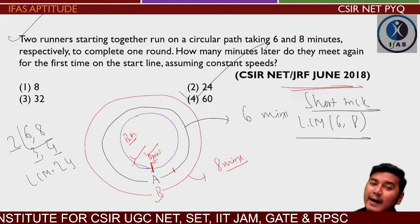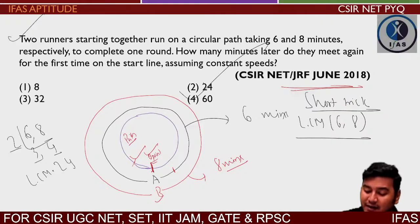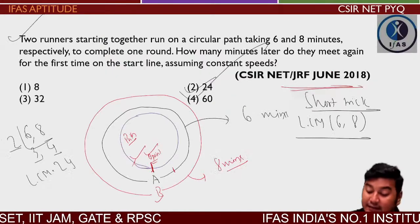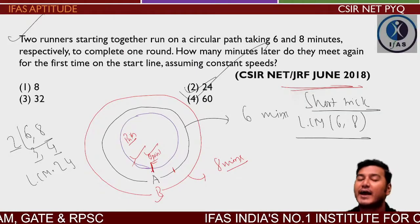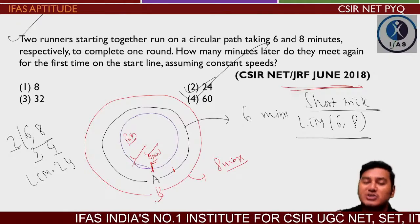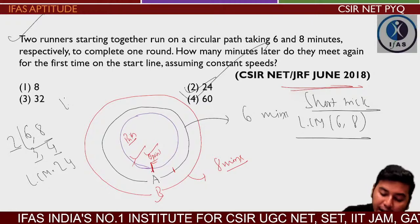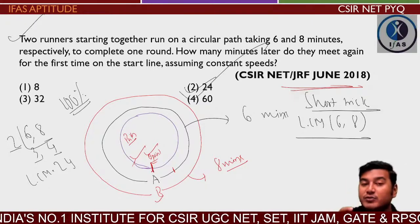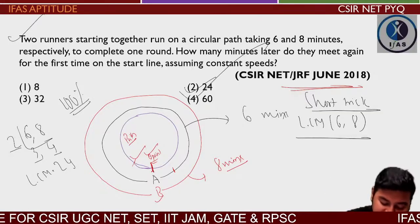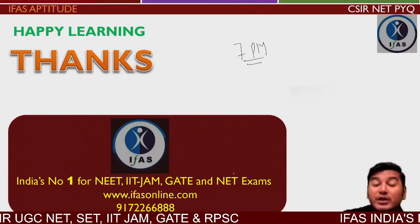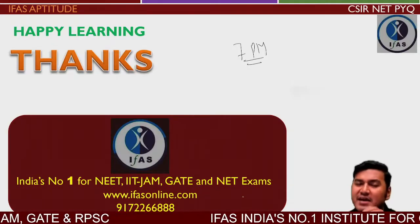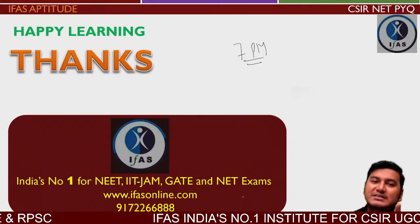Every question in this chapter must be approached logically and analytically. CSIR NET keeps repeating similar types of questions in slightly different forms. If you practice well, you can score 100% marks from this portion of CSIR NET general aptitude. Tonight at 7 PM on the IFAS Aptitude channel, there will be a lecture series on logical deduction with more questions and previous year solutions.